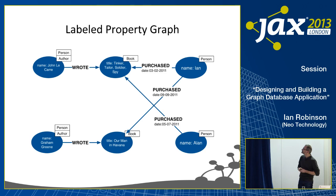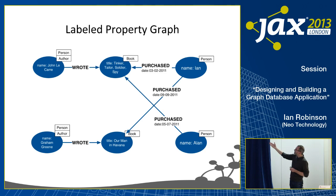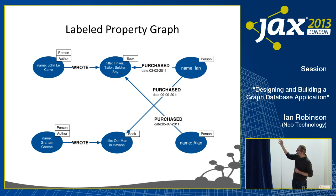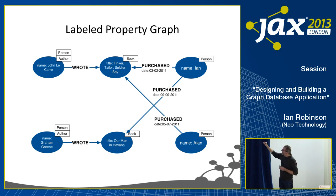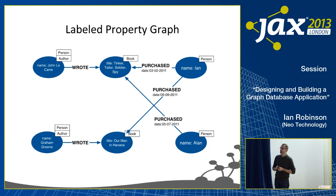We use nodes to represent the things we're interested in — little islands of data — and then we structure the dataset by introducing named and directed relationships. Every relationship has a name, like 'wrote' or 'purchased', and every relationship has a direction. Together the name and direction provide semantic context that helps understand the context within which each node is situated, and structures the overall dataset. Relationships are defined at the level of individual nodes rather than any class or type, so no two nodes need be connected in exactly the same way.